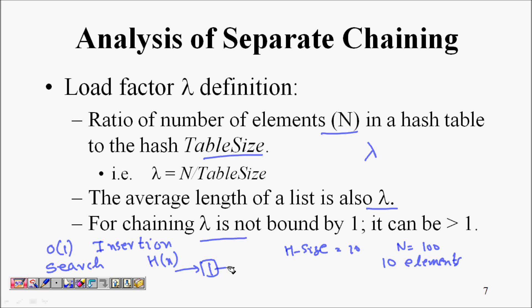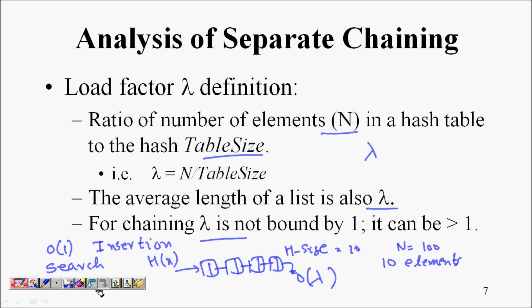That linked list has an average length of λ, so search takes the time to compute h(x) plus O(λ) to traverse the list in the worst case.